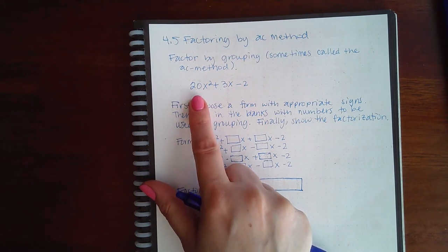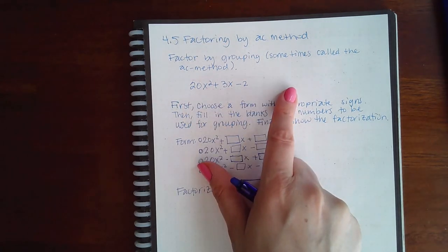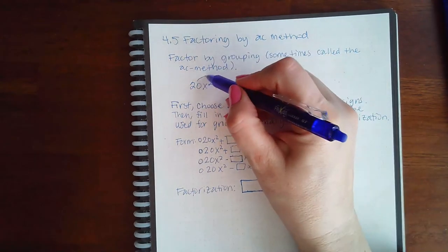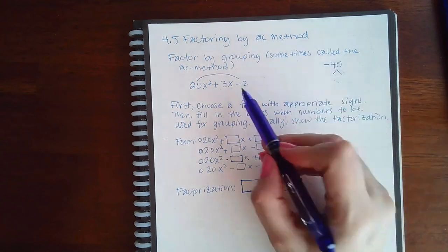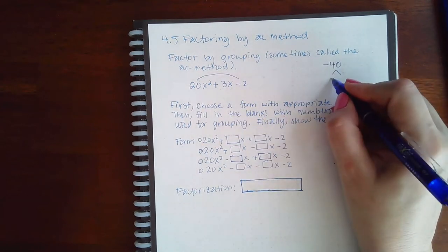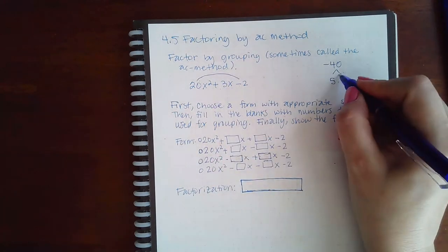We're going to do the problem exactly as we would have. So 20 times negative 2 is negative 40. The factors of negative 40 that subtract to give me 3 are 5 and 8. Since it's positive 3, the bigger number would have to be positive, making the smaller number negative.